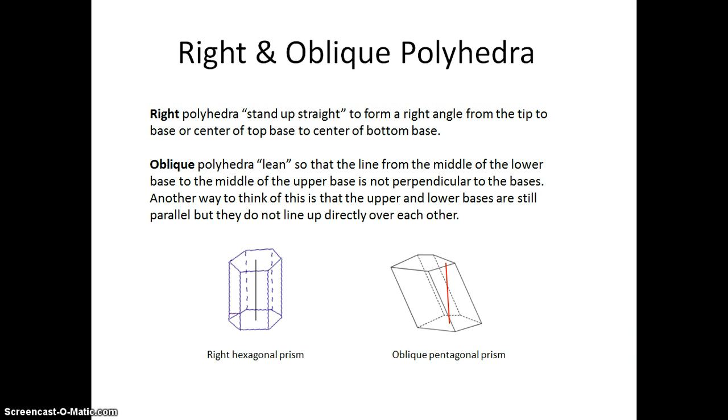A right polyhedron stands up straight when it's laid on the table. It forms a right angle to the table. If we drew a line from the middle of the top base to the middle of the bottom base, this line would be perpendicular to the table it's standing on.